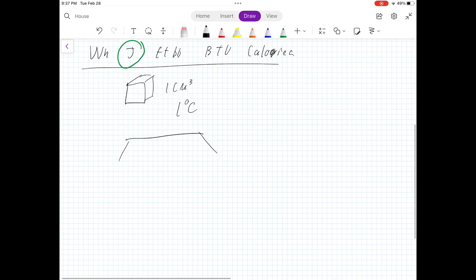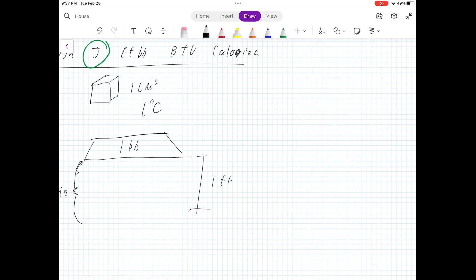So a foot pound, like I explained to you at the very beginning, is if we have one pound of mass, we elevate that by one foot, and then the amount of potential energy in this mass here is one foot pound. If you've probably, if you've ever taken a physics class, you've seen the equation potential energy equals mass times gravity times height.